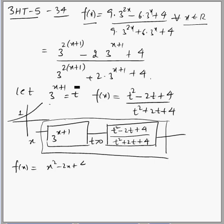And now we convert this ratio of two exponential functions into a rational function of x, by replacing 3 to the power x plus 1 equals to t. So this is how f(x) is simplified. Or another way to say this is, to find range,